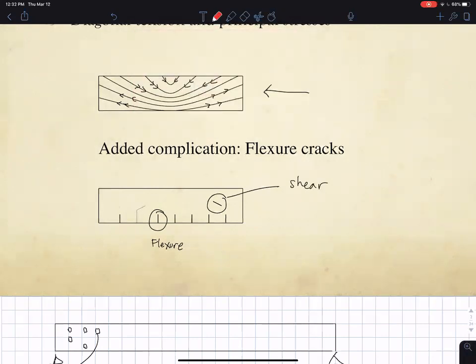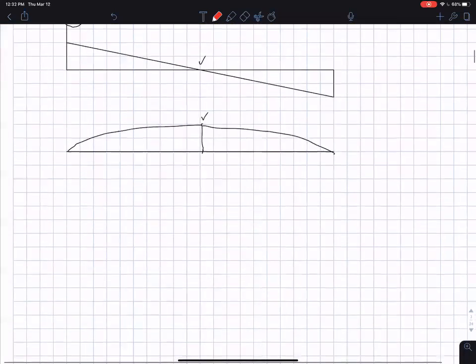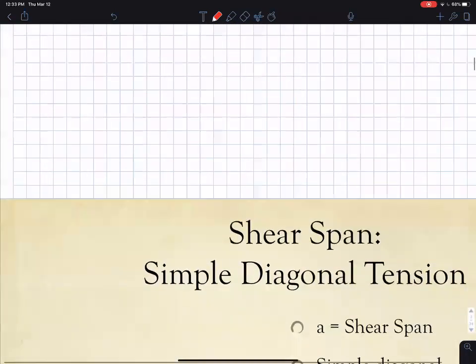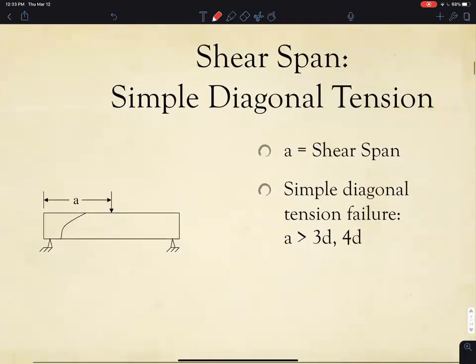It gets further complicated if you actually have stirrups in the beam, which you will if you have shear reinforcement. Unfortunately, everything we learn about unreinforced beams from classical mechanics—MY over I, VQ over IT, that sort of thing—is no longer applicable.